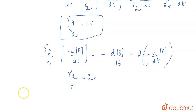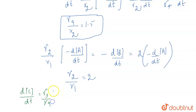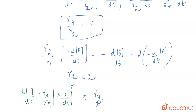Now, if we calculate dC/dt divided by dD/dt, we get γ3 by γ4 into d of D by dt. From here, γ4 by γ3 will come out. So that is your correct answer. That's all for the class.